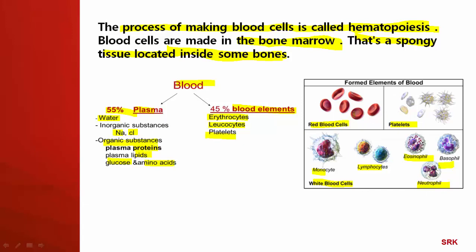What are the functions of these blood cells? RBCs are red in color; the red color is due to the presence of hemoglobin. That hemoglobin is capable of transporting both oxygen and carbon dioxide. The platelets are involved in blood clotting.